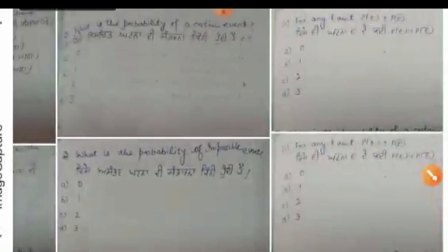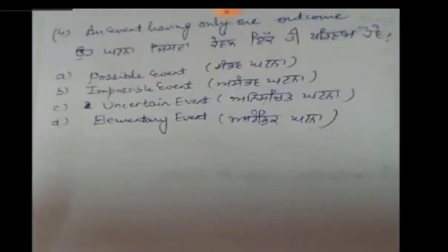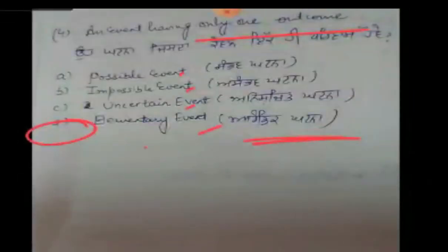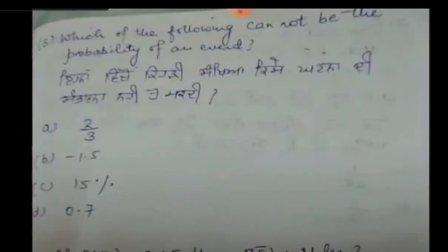Come to the fourth sum. An event having only one outcome — an event that has only one outcome — what is it called? There are 4 options: possible event, impossible event, uncertain, or elementary. So our answer is option D — elementary event.